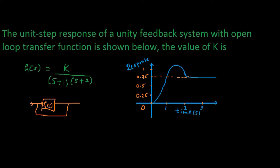So the input is u(t) and the output is shown here. U(t), whose Laplace transform is U(s) = 1/s. This is our input. We are applying input 1/s and G(s) is k upon (s+1)(s+2). This is our unity feedback.